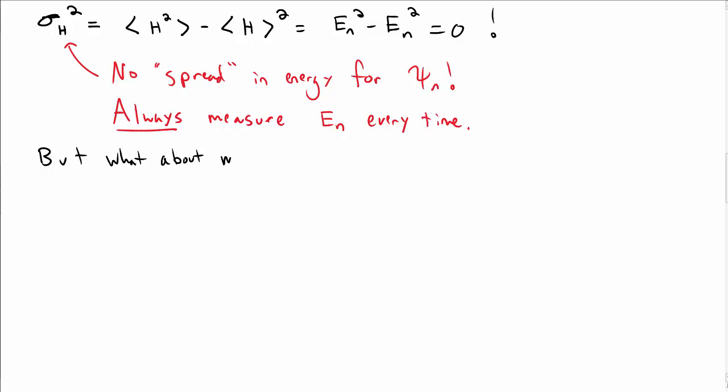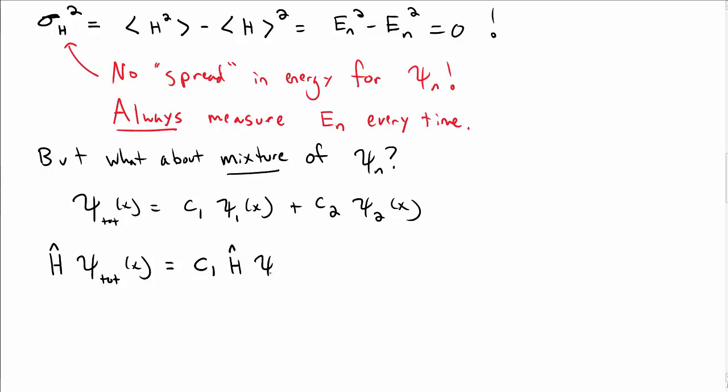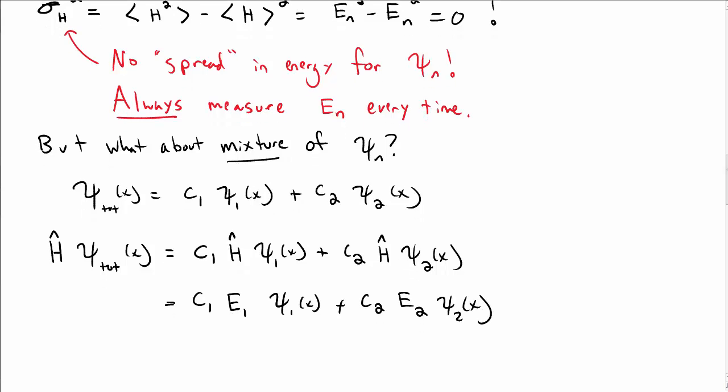But what if you do have a mixture of different psi sub n states? In particular, if your total wave function is a sum of c1 psi 1 plus c2 psi 2, where psi 1 and psi 2 have different energies. Then h hat times psi gives you c1 h hat times psi 1 plus c2 h hat times psi 2. Each of those is individually an energy eigenfunction. So we get e1 psi 1 plus e2 psi 2.